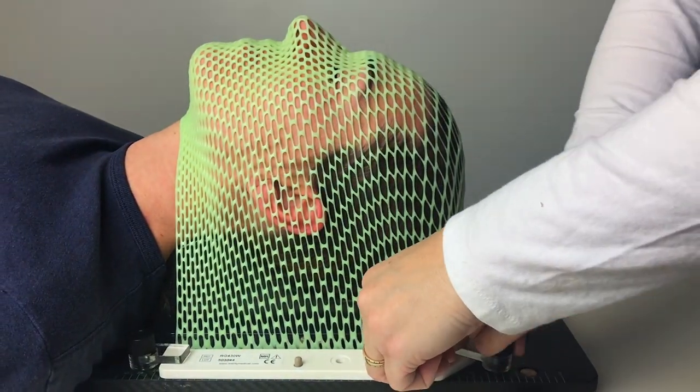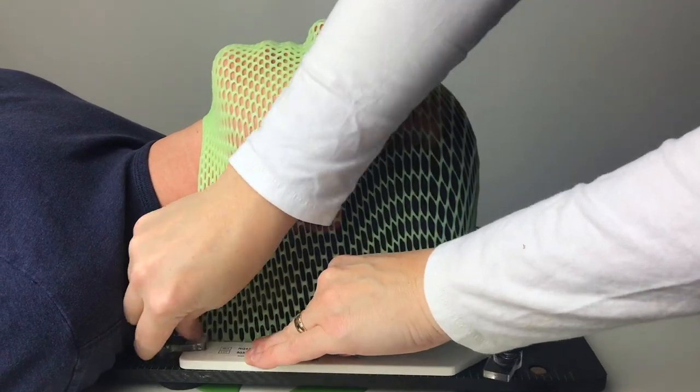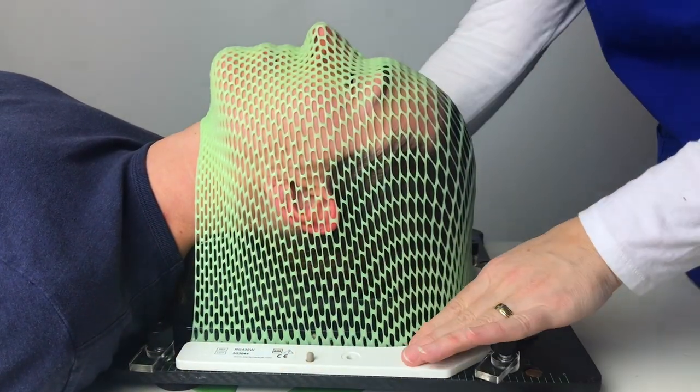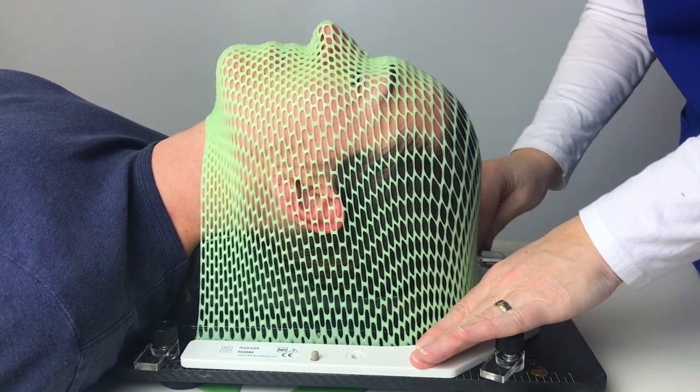Once the mask is cured, you can remove it from the base plate by loosening all four clips, and then pull up off the patient.